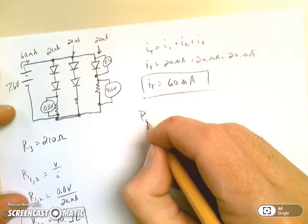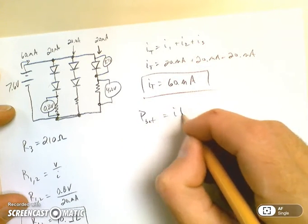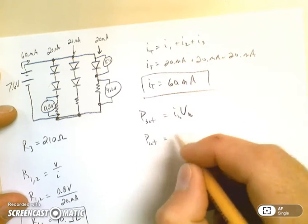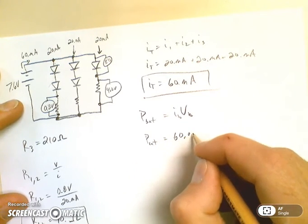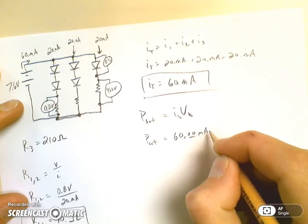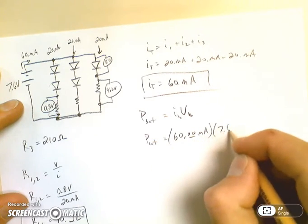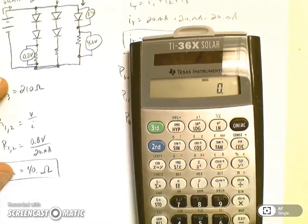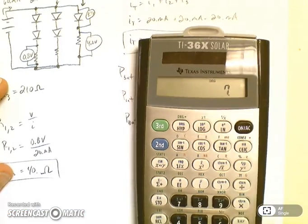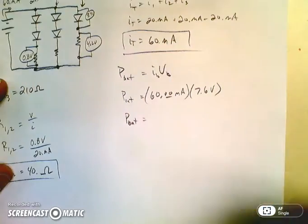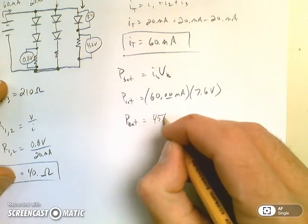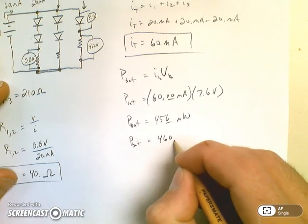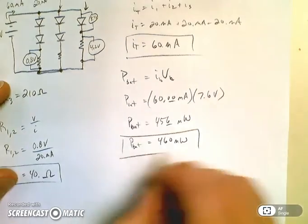So now the power of the battery is equal to IV. Power from the battery equals the current, so we have 60 times 7.6. That's 456 milliwatts. The battery power is 460 milliwatts looking at significant figures.